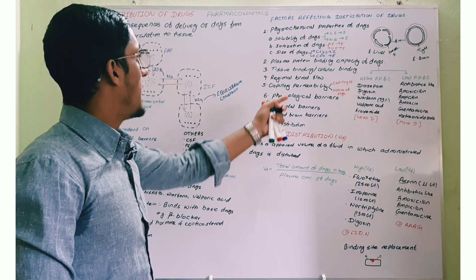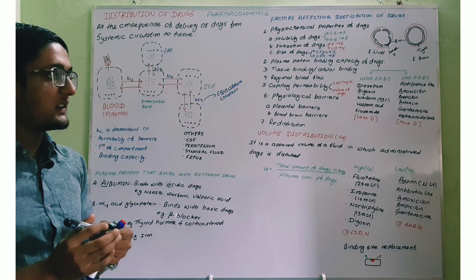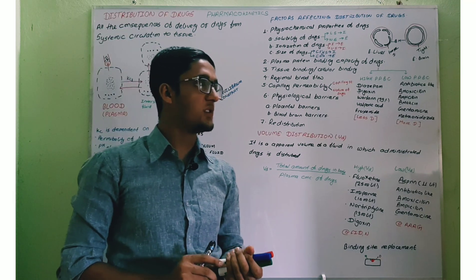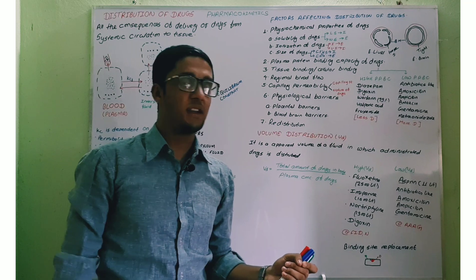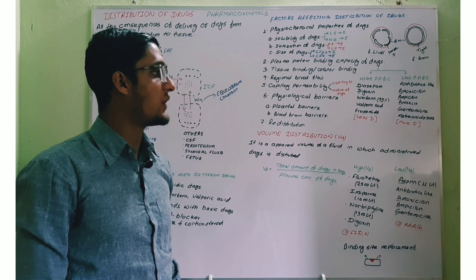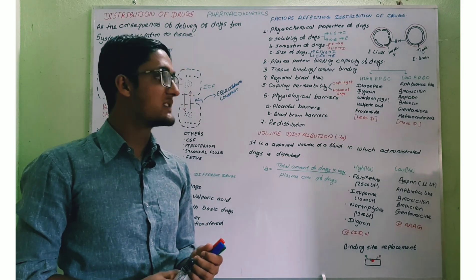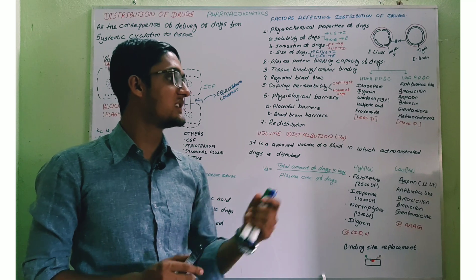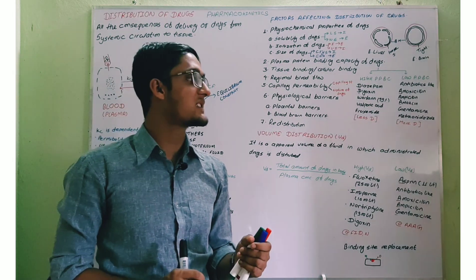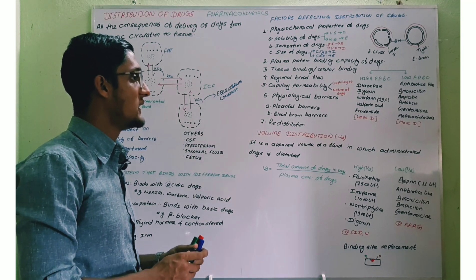Now let us come to tissue binding capacity, also called cellular binding. Some specific drugs bind with specific tissues: chlorpromazine binds in the brain tissue; atropine is mainly binding in the iris; iodine mainly distributes in the thyroid gland; digoxin binds in the heart and skeletal muscles; and tetracycline is mainly present in bone and teeth, having high binding capacity with bone and teeth.